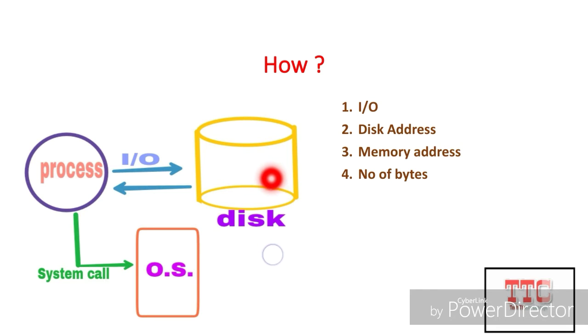If disk controller is not free, a queue is created for every request to be serviced by the process. Then operating system chooses which pending request to service next.